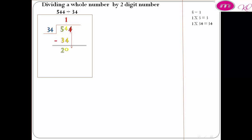Bring down 4. 204 divided by 34. 30 divided by 4 equals 6. 6 above 4.